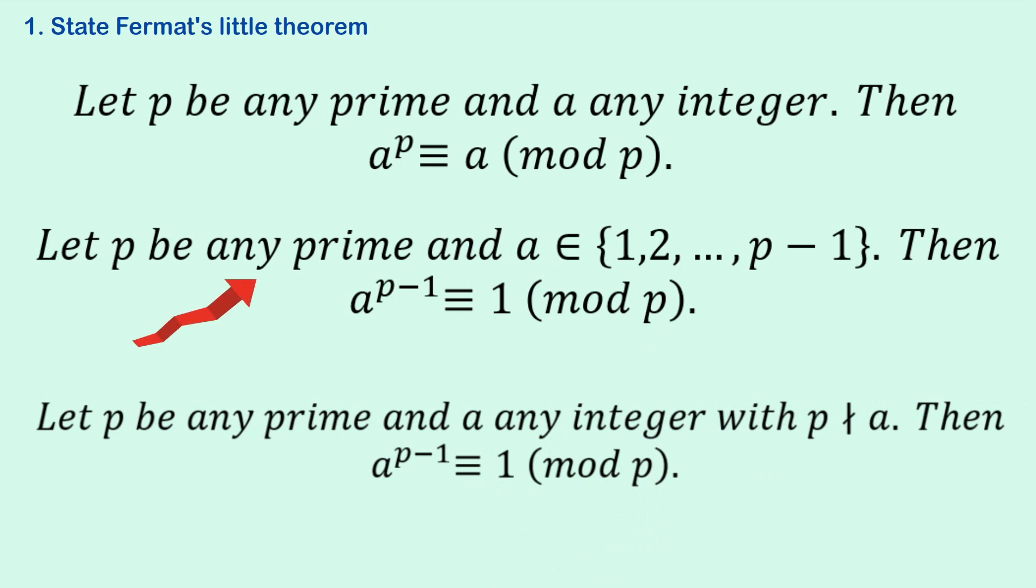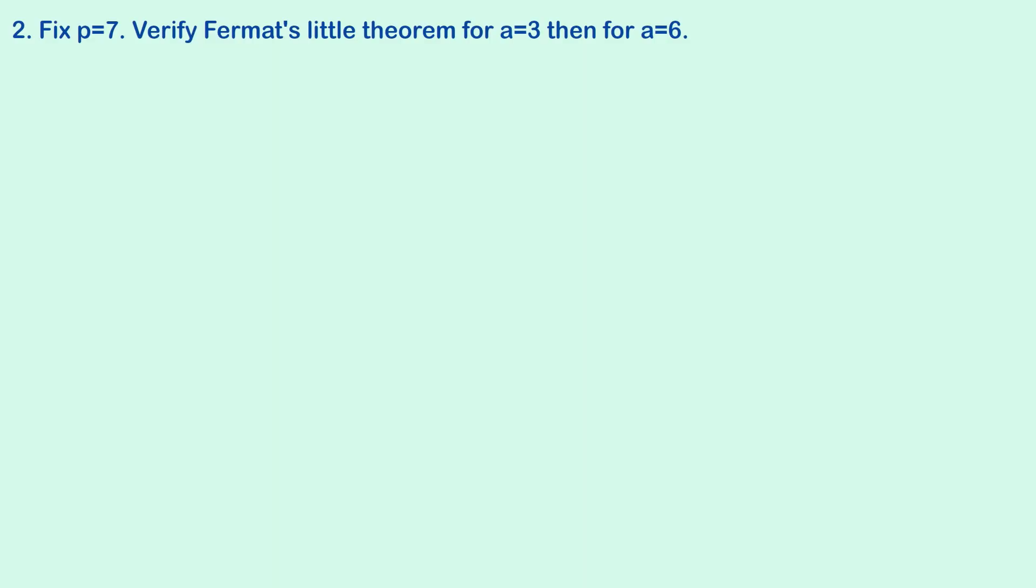Now, I'm going to use this middle one for most of the solutions for the following problems. So let's go on to question 2. It says fix p equals 7. So our prime is 7. And verify that Fermat's Little Theorem for a equals 3 and then for a equals 6. So here's the middle definition of the theorem that I had from the previous slide.